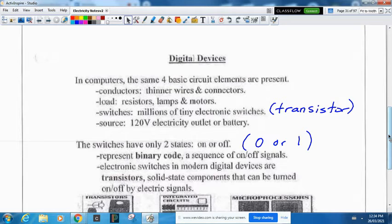Switches include transistors. There's millions of switches inside computer devices, not just one to turn on and off. It's all binary language, zeros and ones. The source could be 120-volt outlet or battery of different voltages.